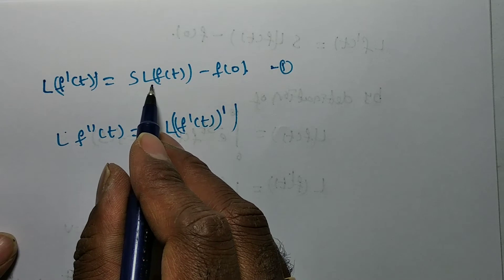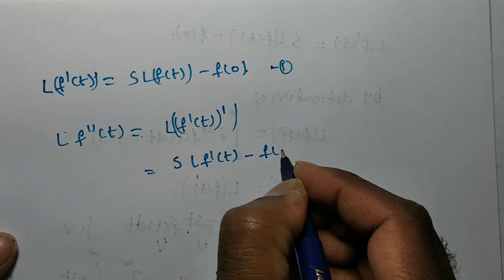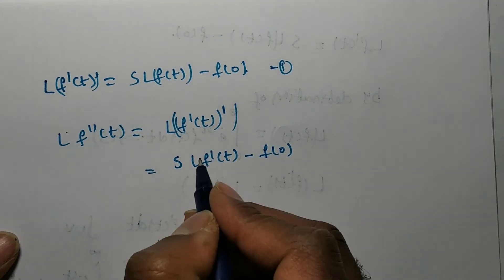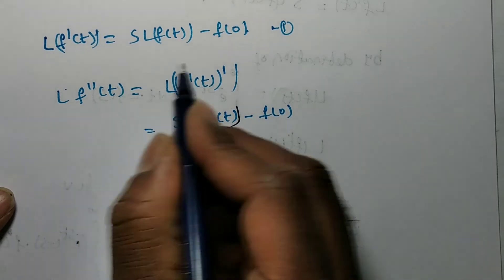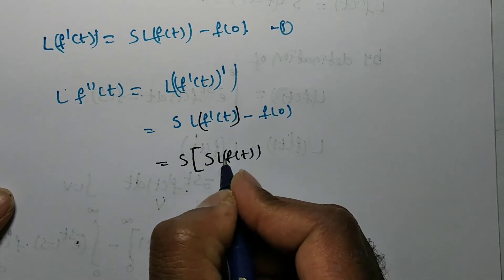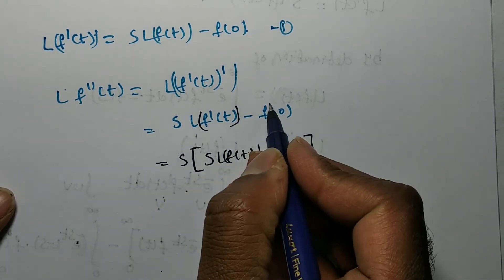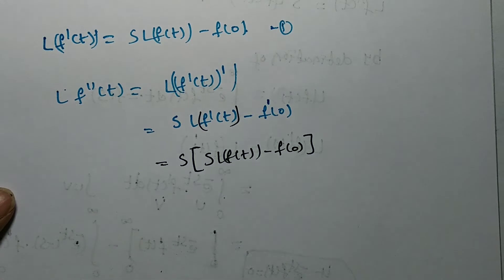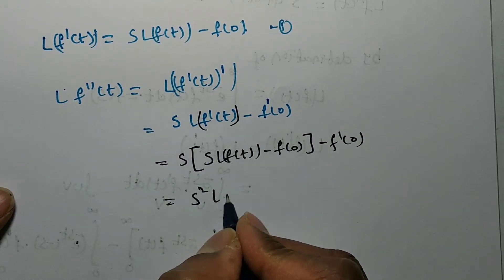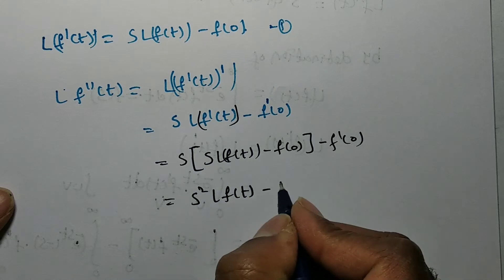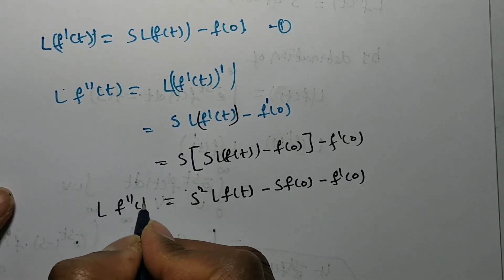Substituting equation 1 again for L{f'(t)}: s·[s·L{f(t)} - f(0)] - f'(0), which gives s²·L{f(t)} - s·f(0) - f'(0). This is the value of L{f''(t)}.